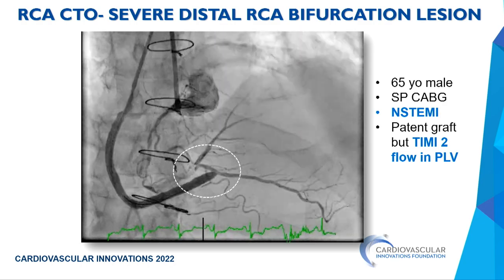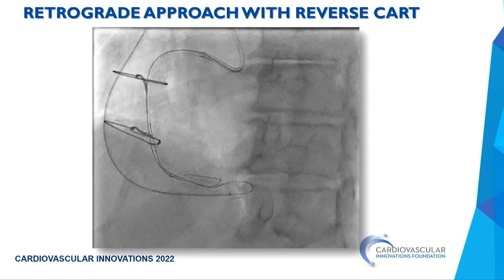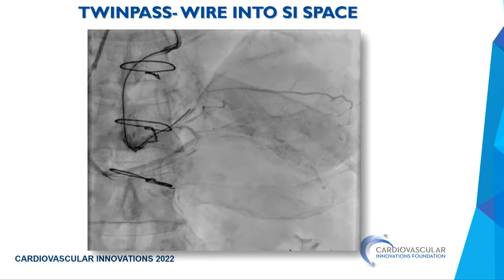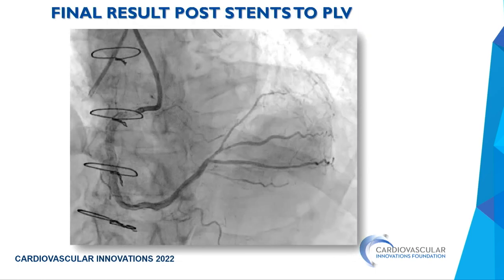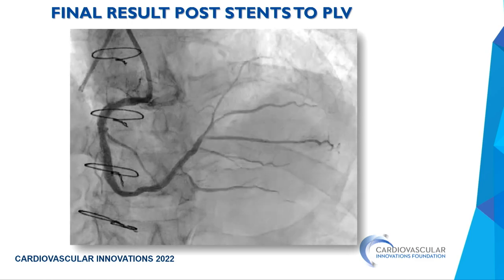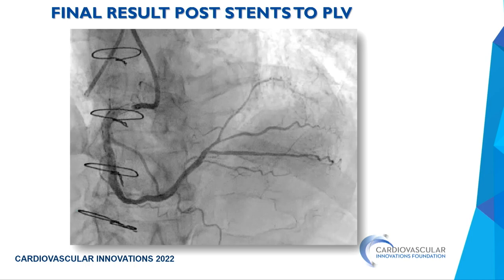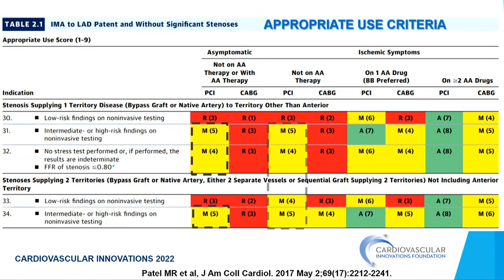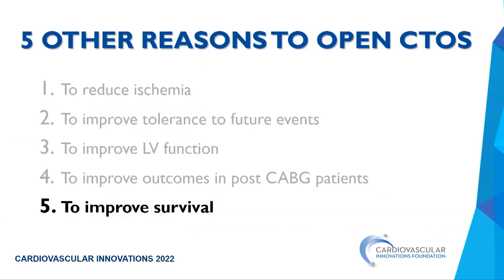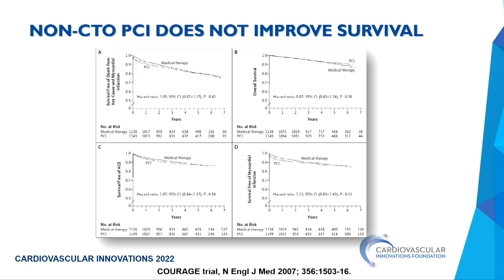Looking at appropriateness criteria when the IMA is patent and you have either SVG or native disease, it is rarely appropriate to not revascularize — most of the time it is moderately or clearly appropriate. Regarding improving survival: non-CTO PCI does not improve survival, yet in the most recent meta-analyses there is a consistent 48 percent reduction in mortality with CTO PCI. MI rates are all over the place — I don't believe opening a CTO reduces MI since it is already closed — but opening a CTO can reduce mortality.